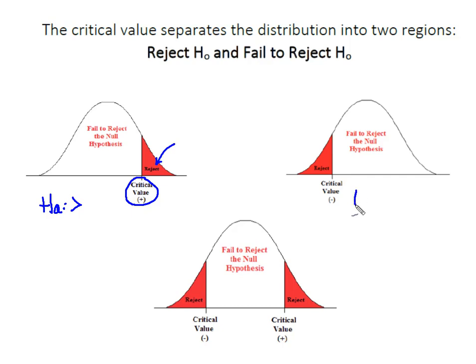In this instance, we had an HA that looked like less than, which gives us a one-tailed left test with the rejection region in the lower tail of the curve with a negative critical value.